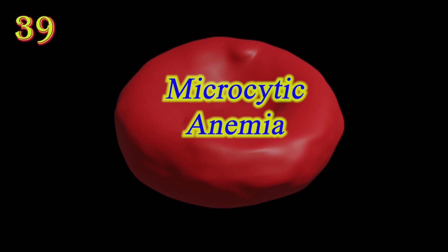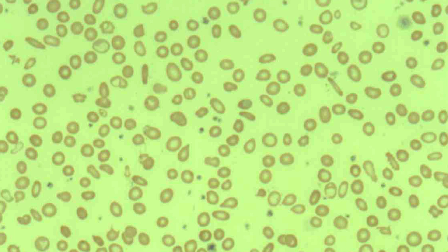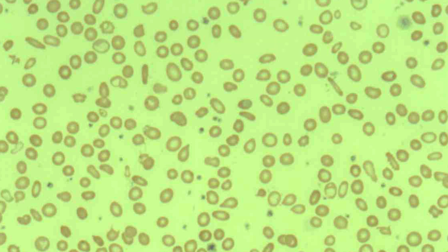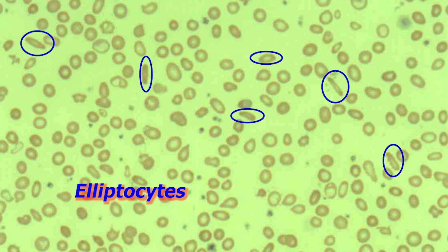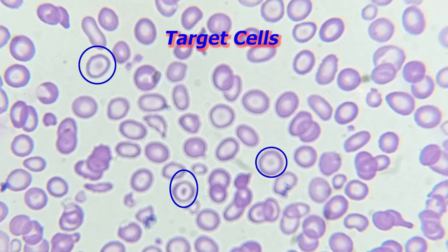Microcytic anemia is any of several types of anemia characterized by smaller than normal RBCs. In microcytic anemia, the RBCs contain less hemoglobin and are usually hypochromic; MCV and MCH levels are low. Causes include iron deficiency anemia, thalassemia, and rare acquired causes such as lead poisoning, zinc deficiency, and copper deficiency.